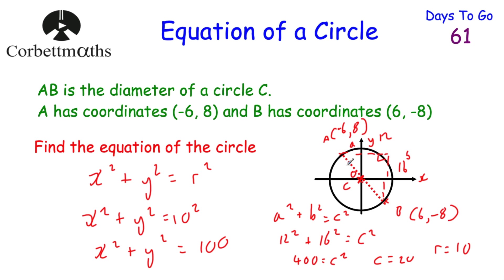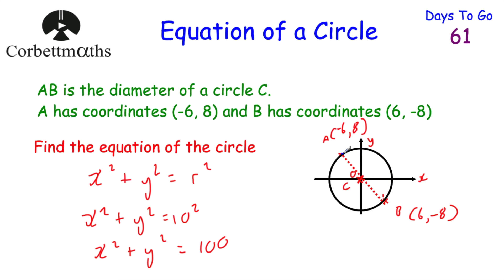So the equation is x squared plus y squared equals 10 squared, which gives x squared plus y squared equals 100. Alternatively, rather than finding the diameter, we could have found the radius directly — using the distance from the origin O to point A, going 6 across and 8 up with Pythagoras' theorem, which also gives a radius of 10. Either way, the equation is x squared plus y squared equals 100.